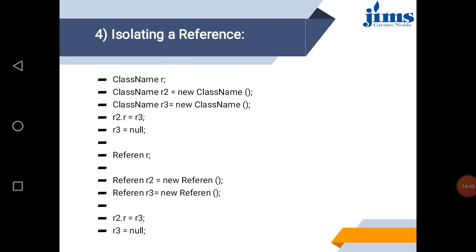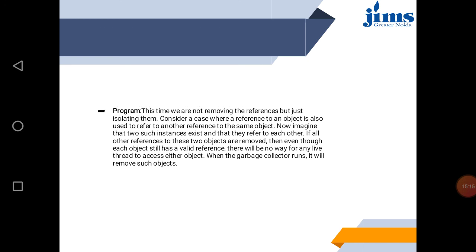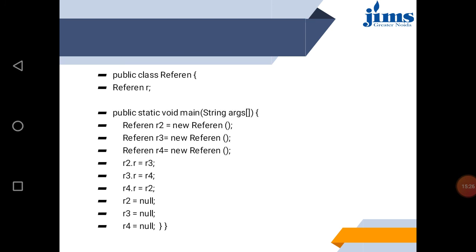The fourth way is isolating a reference. You create an object and assign its reference as null, making that object reference-free. The garbage collector will identify that object and delete it. In this program, rather than removing the reference variable, we isolate the references by setting all objects to null referencing, so these objects can be removed.